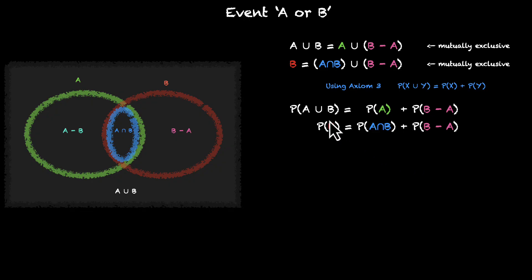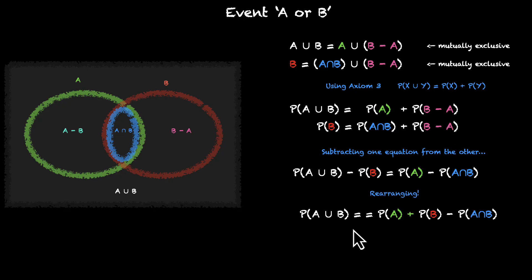So, let's see what we have. We have A union B, we have A, B and A intersection B. This is something that we don't need, B minus A. So, let's subtract one equation from the other so that we can eliminate this. We'll have probability of A union B minus probability of B equals to probability of A minus probability of A intersection B. This cancels out. And a little rearranging will give us the result that we are looking for.